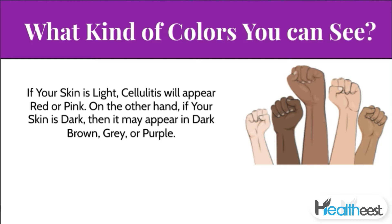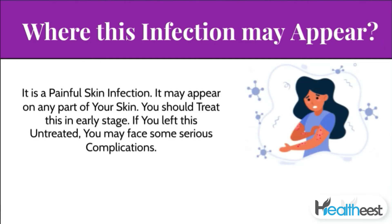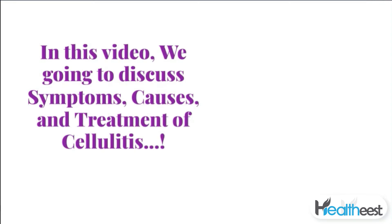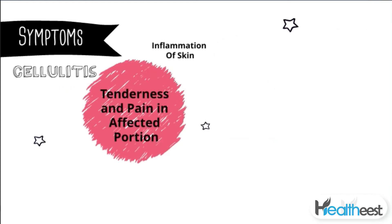On the other hand, if your skin is dark, it may appear in dark brown, gray, or purple. Where can this infection appear? It is a painful skin infection and it may appear on any part of your skin. You should treat this in the early stage — if you leave it untreated, you may face some serious complications. In this video, we are going to discuss symptoms, causes, and treatment of cellulitis.